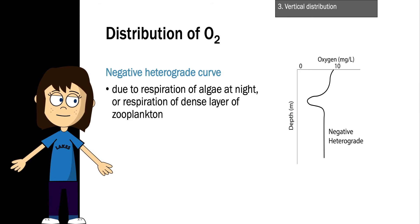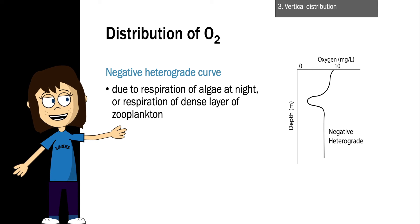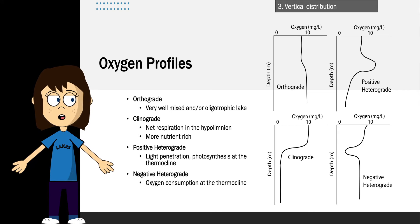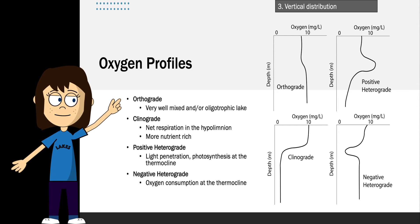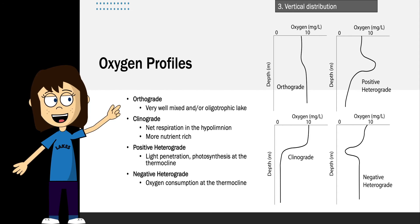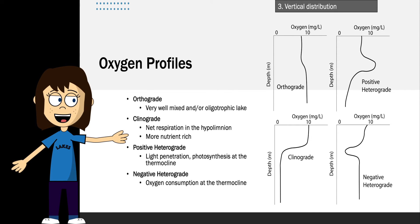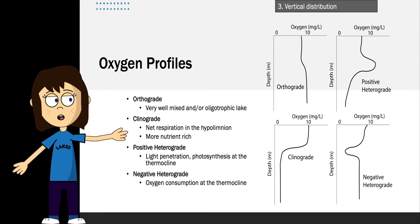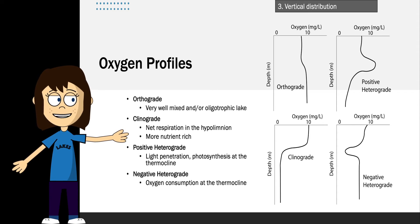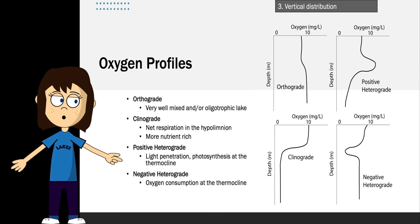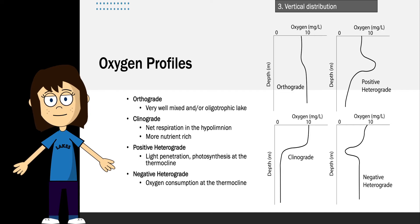The last type is the negative heterograde curve, which has the opposite shape of the positive heterograde curve — an oxygen decrease at the thermocline. This can be due to respiration of algae at night or respiration of a dense layer of zooplankton. To review: orthograde curves are in oligotrophic lakes with oxygen near 100% saturation; clinograde curves show respiration in the hypolimnion and sometimes complete loss of oxygen in highly productive eutrophic lakes; positive heterograde curves occur in low-nutrient lakes with deep chlorophyll maximum; and negative heterograde curves are generally rare, showing oxygen consumption at the thermocline.